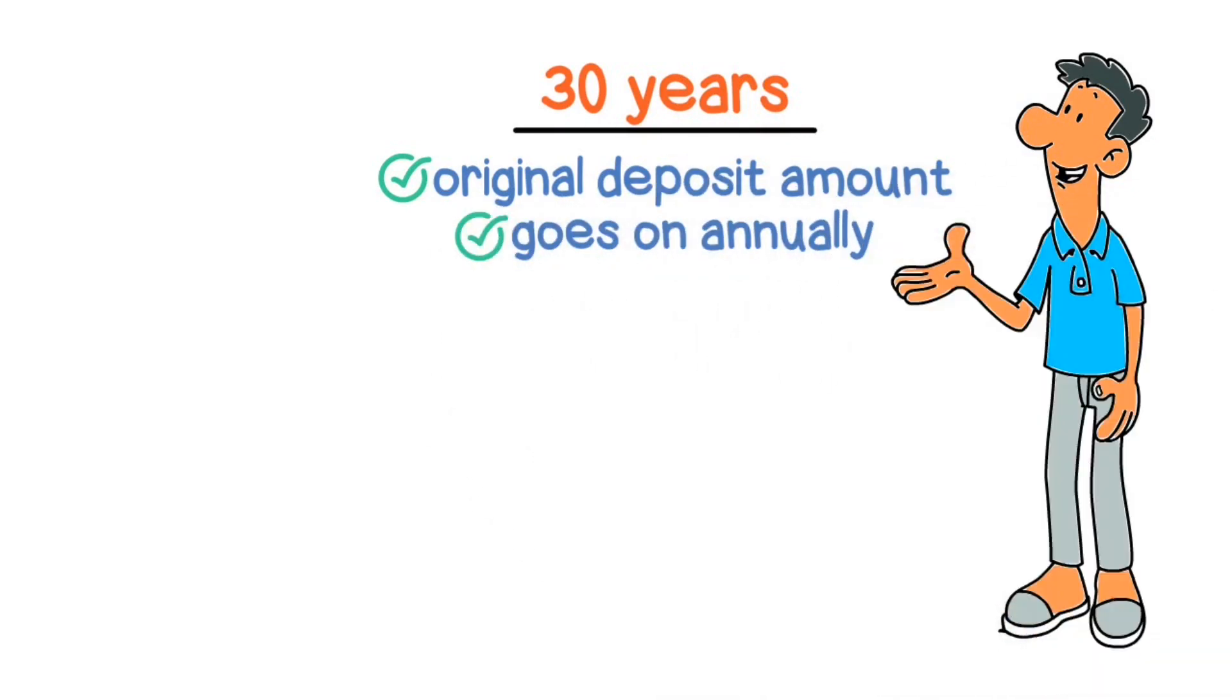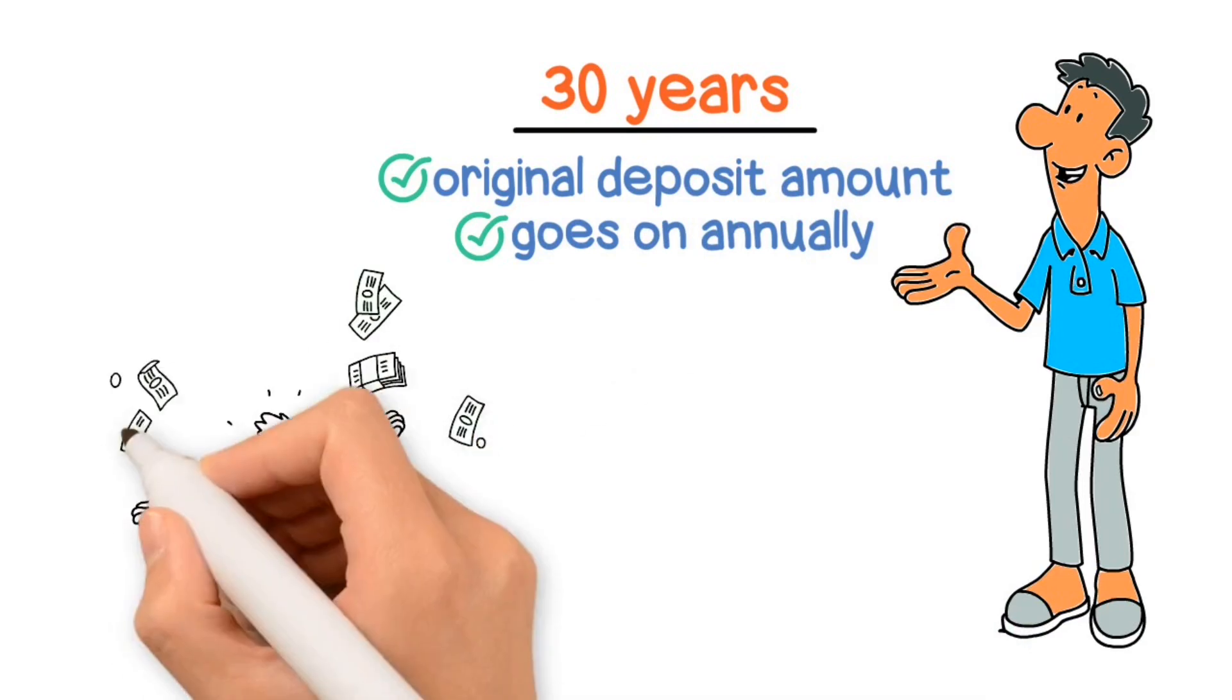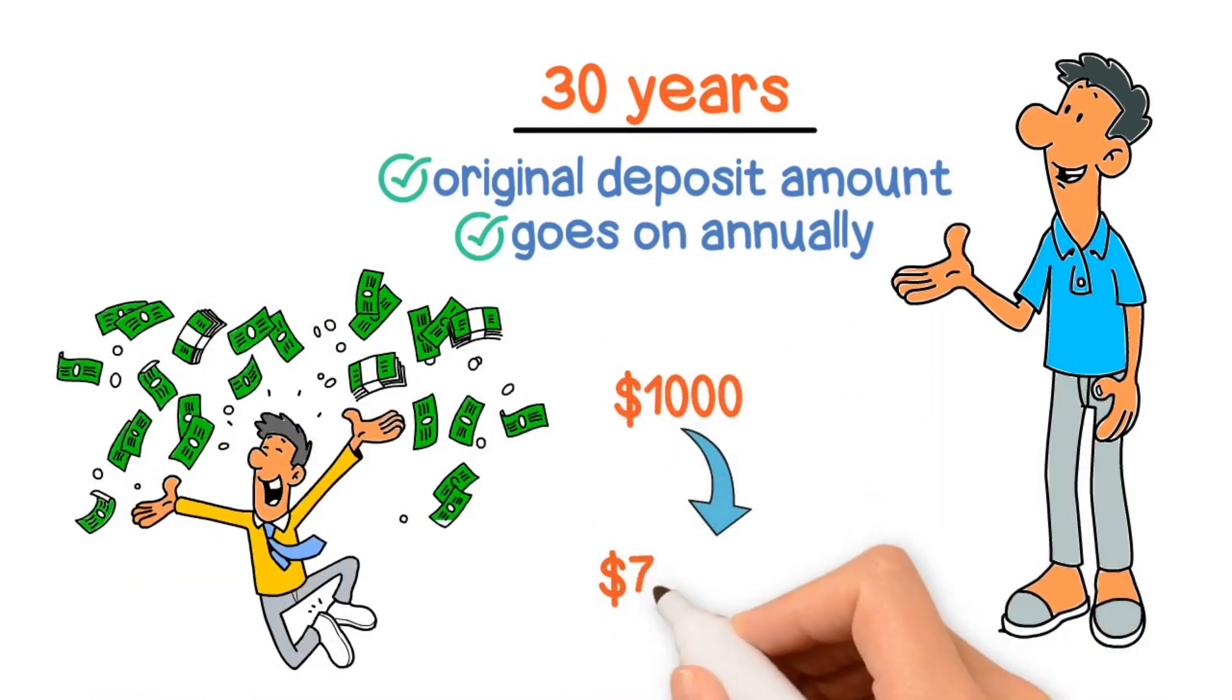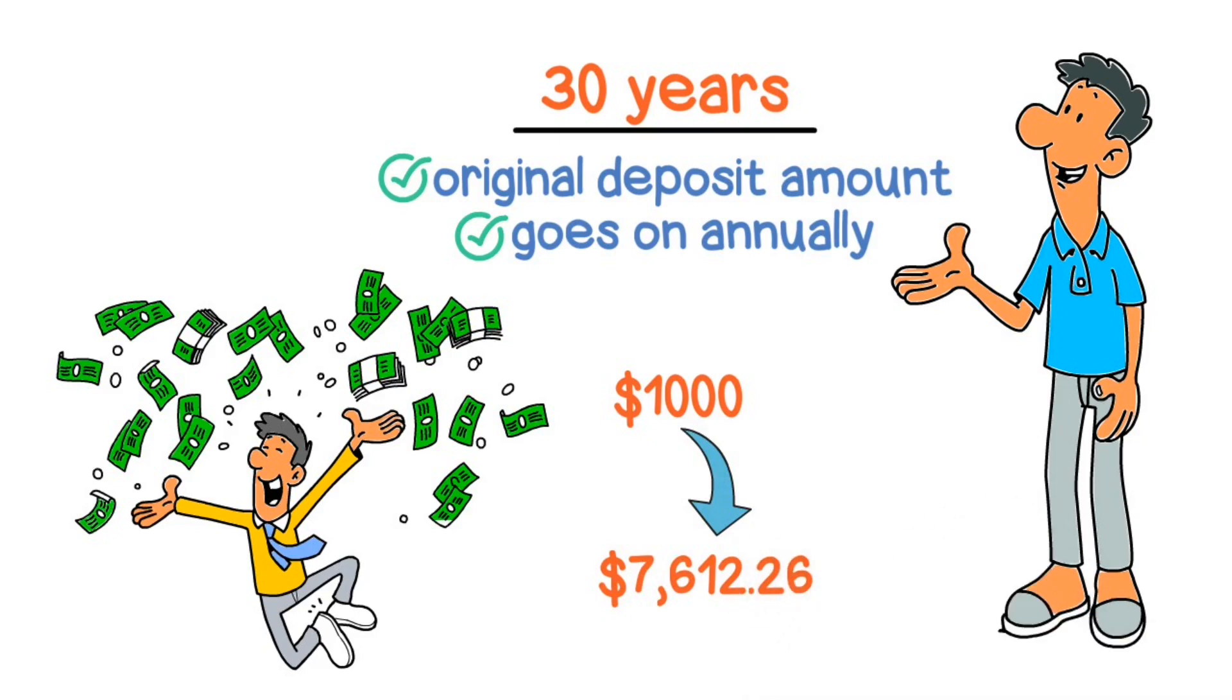After 30 years, your original investment of $1,000 would have compounded to $7,612.26.